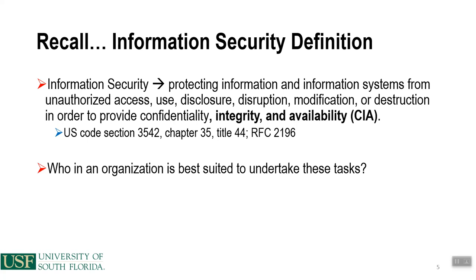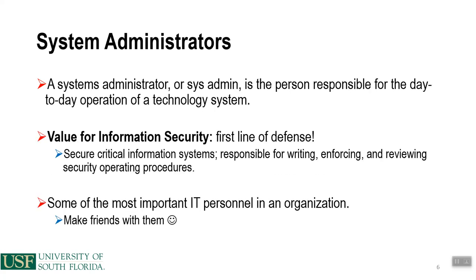Information security is protecting information and information systems from unauthorized access, use, disclosure, disruption, or modification in order to provide confidentiality, integrity, and availability — the CIA triad. This definition is used across government agencies like DHS and NSA. To clearly identify who within an organization is best suited to undertake these tasks, you'd need someone with a good understanding of the organization's information assets, systems, business needs, software, and who gets access to what.